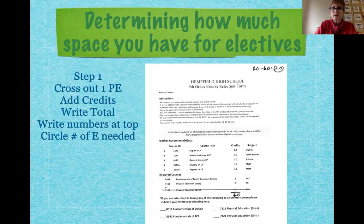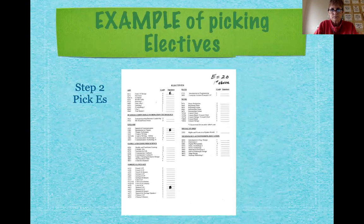I want to see it exactly like I have it up there. I look at every single student's worksheet and I need them all to be done in this way so that I can check them quickly and for accuracy. When you have that number, circle it, and then we're going to go to the other side and go elective shopping. The student put an E beside the courses they want, which equals two credits between the back side and the front side of this paper.